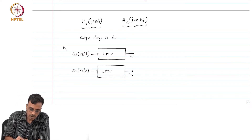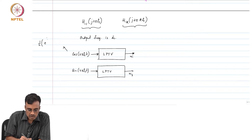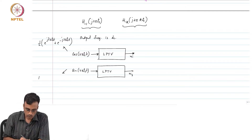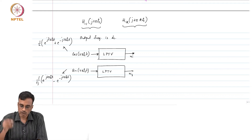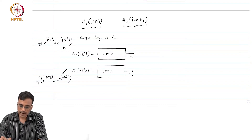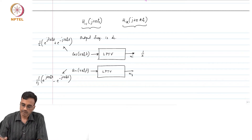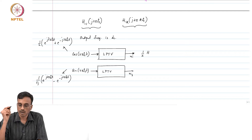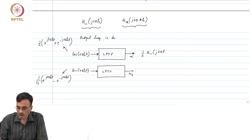cos(2πfs·t) is nothing but half of [e^{j2πfs·t} + e^{-j2πfs·t}], and sin(2πfs·t) is (1/2j)[e^{j2πfs·t} − e^{-j2πfs·t}]. So what will we get? You will get half times H_{-1}(j2πfs)...